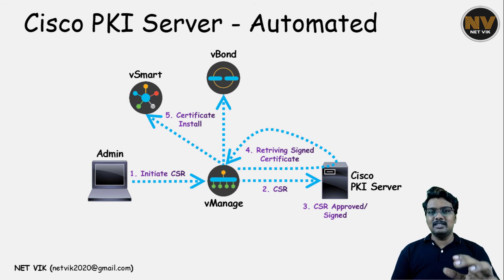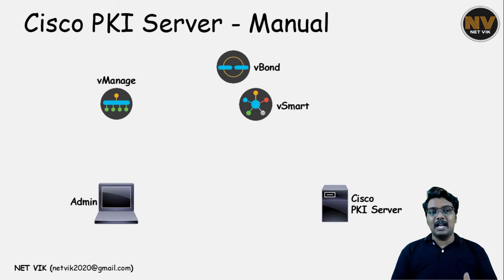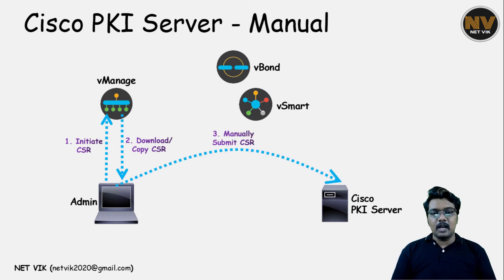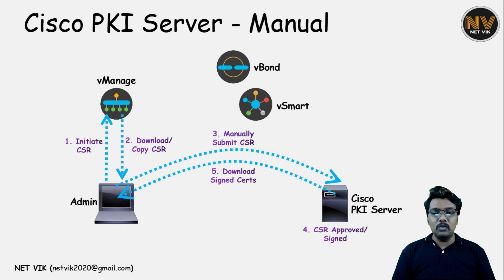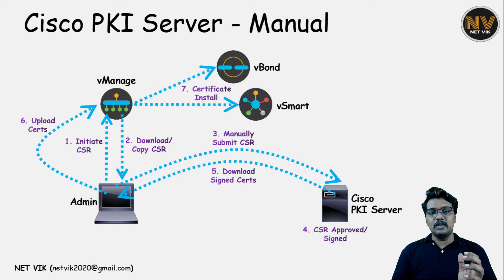This is the recommended method because it has very few steps and most things are automated compared to the Symantec and DigiCert methods. Moving on to the next method — manual Cisco PKI server. This applies in environments where vManage does not have internet access but we still want to use the Cisco PKI model. The administrator initiates the CSR, downloads a copy, manually submits it to the Cisco PKI server, and it gets approved. Once approved, the administrator downloads the signed certificate from the Cisco PKI server and uploads it back to vManage. vManage will then install it on itself if it is for vManage, or render it to vBond and vSmart if it is for them.